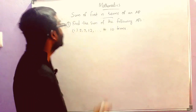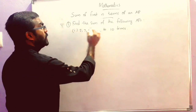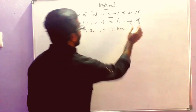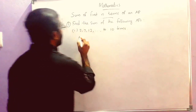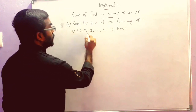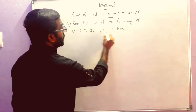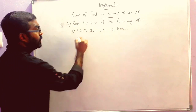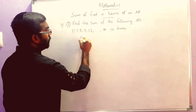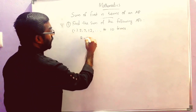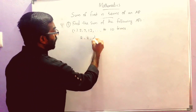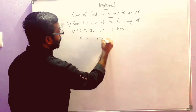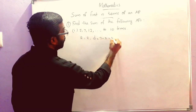The first question is: find the sum of the following APs — 2, 7, 12, etc. to 10 terms. Here we can write A is equal to 2, and D is equal to 7 minus 2, which is equal to 5.